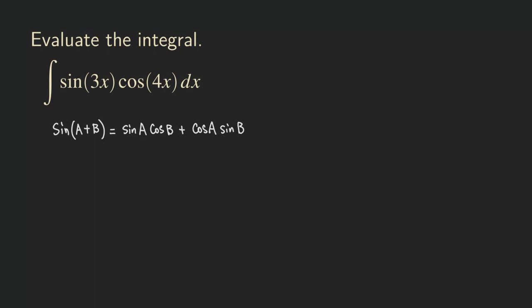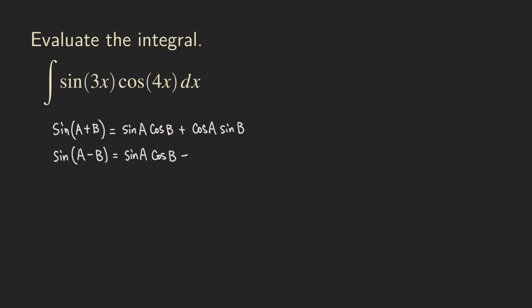We also need the difference formula for the sine: sine of a minus b. If you look at this second one, it's almost the same thing, except that the sign in the middle is different. So instead of a plus sign we get a minus sign: sine of a cosine of b, minus cosine of a sine of b.